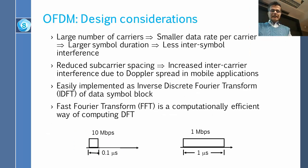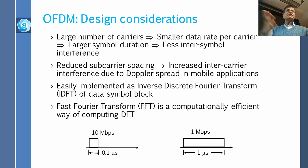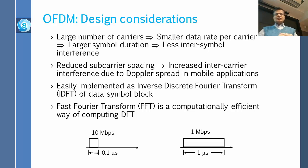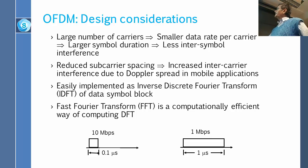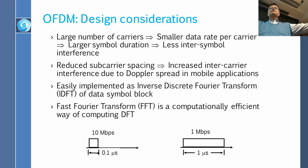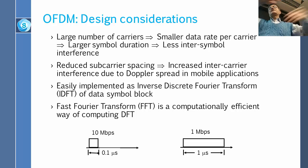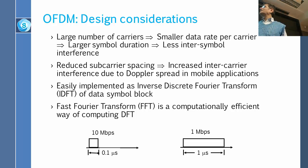For OFDM design: a larger number of carriers is better, though it costs more because you need a chip that can handle that many carriers. Larger number of carriers means smaller data rate per carrier and larger symbol duration. At 10 megabits each bit is 0.1 microsecond; at 1 megabit each bit is 1 microsecond; at 0.1 megabit it is 10 microseconds. The smaller the rate, the larger the bit in time. Therefore, if bits shift in time due to multipath, the larger bits are affected less than tiny bits.